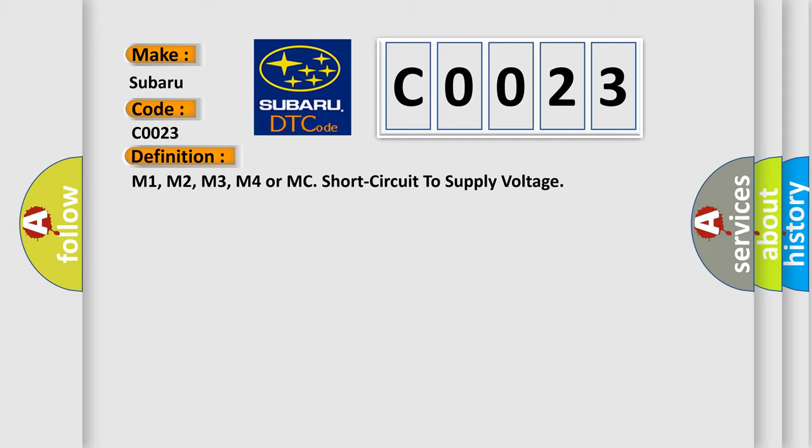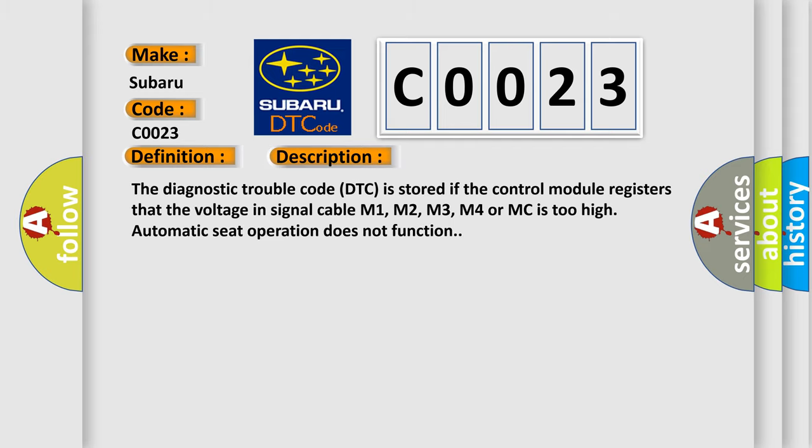And now this is a short description of this DTC code. The diagnostic trouble code is stored if the control module registers that the voltage in signal cable M1, M2, M3, M4 or MC is too high. Automatic seat operation does not function.